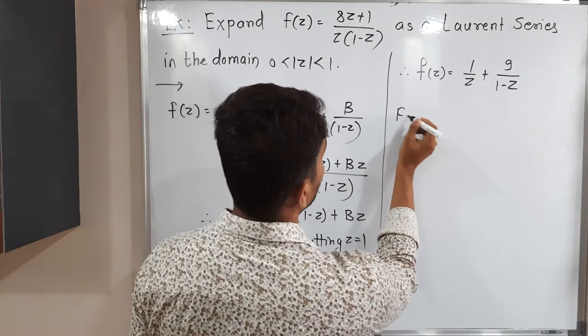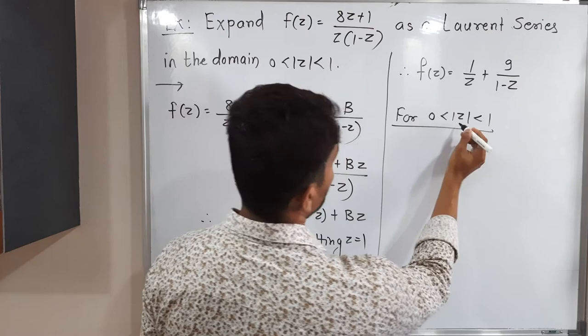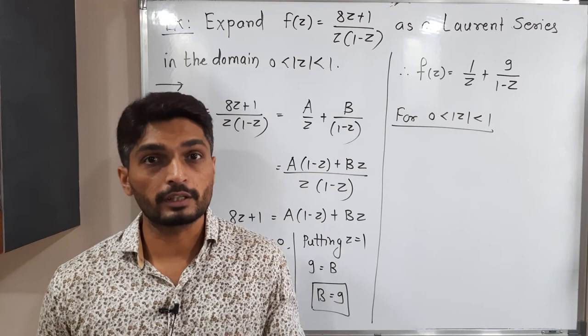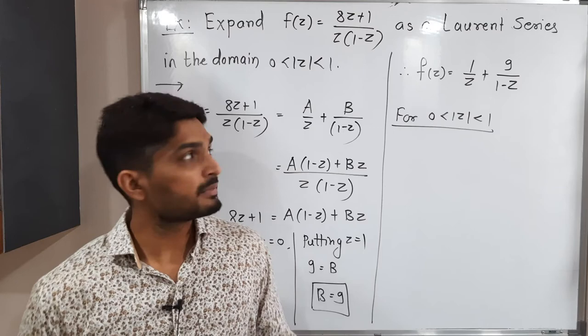After that, let us concentrate on the domain. For what is the region we have? For 0 less than mod z less than 1. Actually, mod z is there. That means mod z is equal to 1. This is equation of circle with center 0 and radius 1. That means we have to find Laurent series about 0.